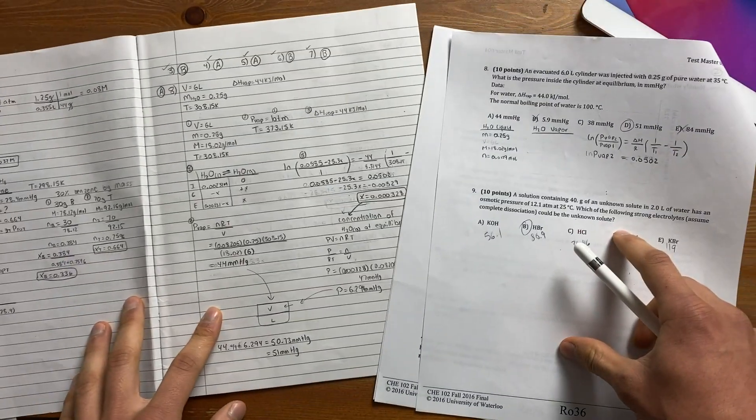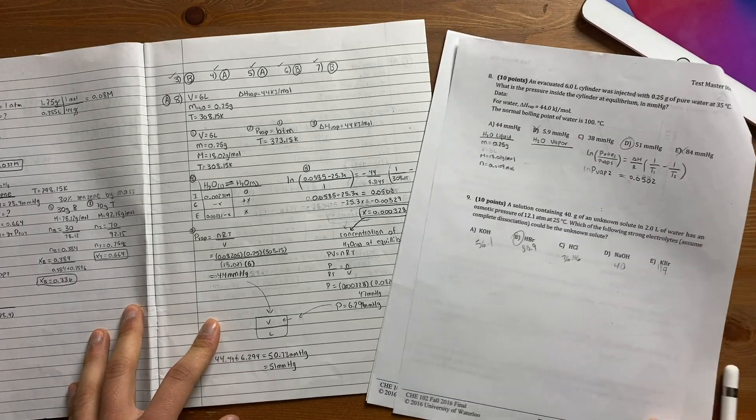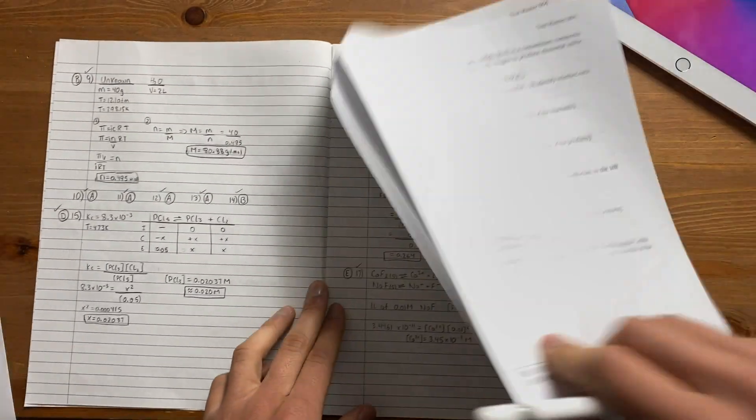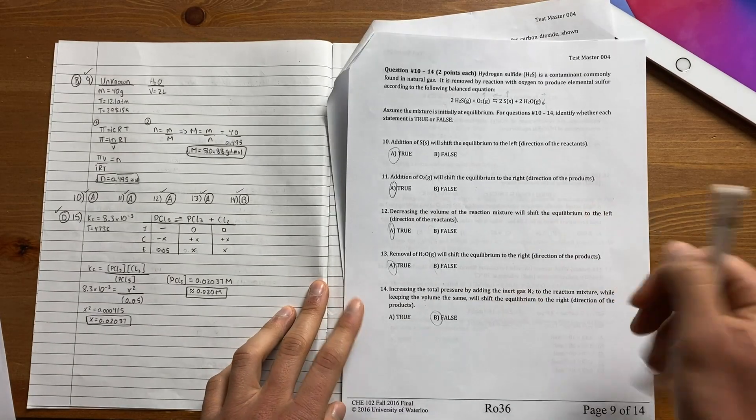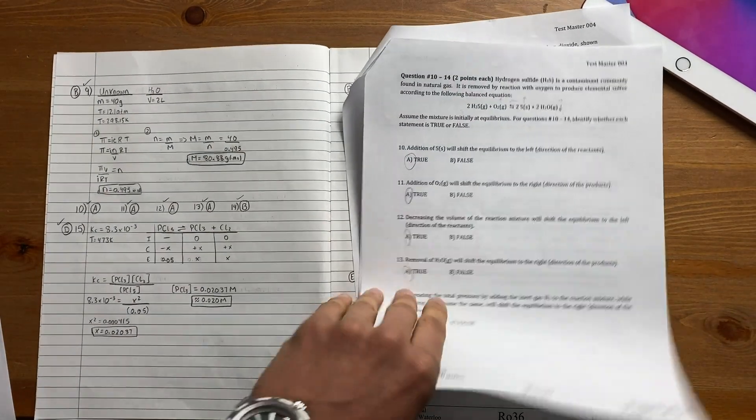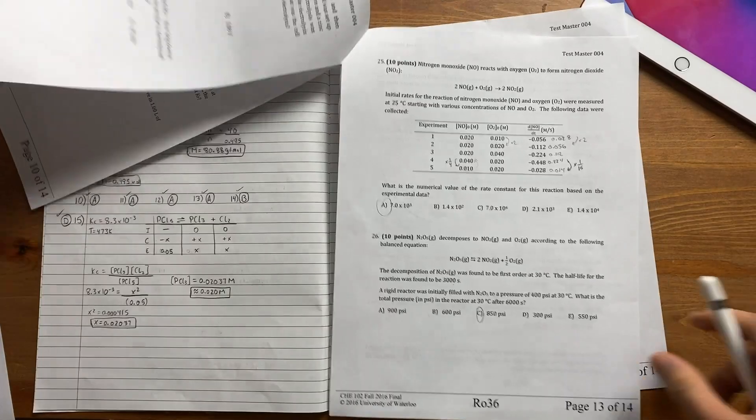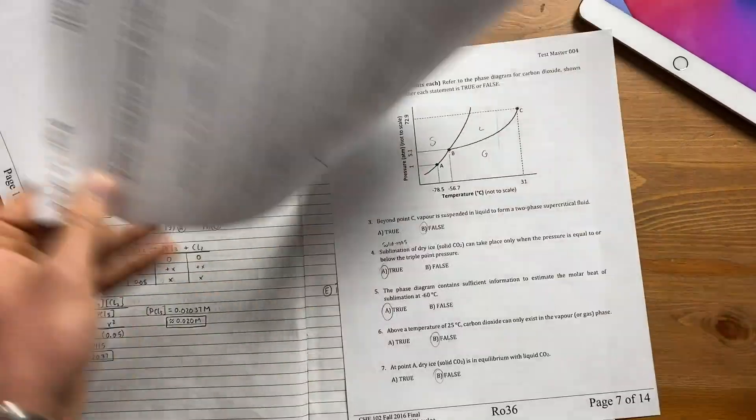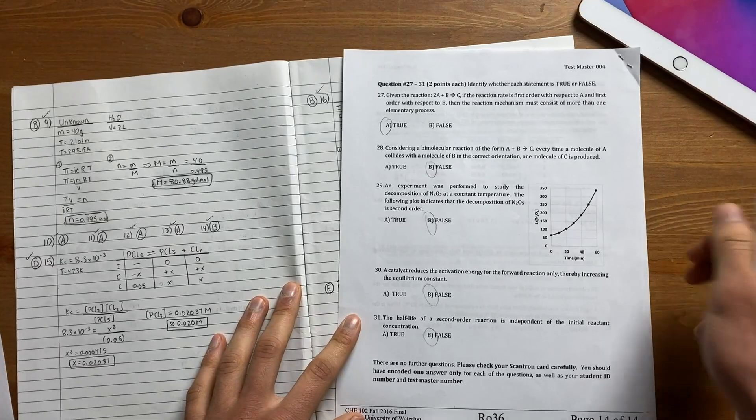The next five questions are all true and false about this diagram. Question 8 was a long question asking us to find pressure in the cylinder, so I had to break it down into steps and use several equations. Then I had some true and false questions about this chemical equation. You'll notice this exam had over 30 questions to solve in two and a half hours, so I always made sure to spend a specific amount of time for each question. For example, questions worth 10 marks I would spend no more than 10 minutes on them, and questions worth 2 marks no more than 2 minutes. That way I can make sure to complete the entire exam which is worth 150 marks in 150 minutes.